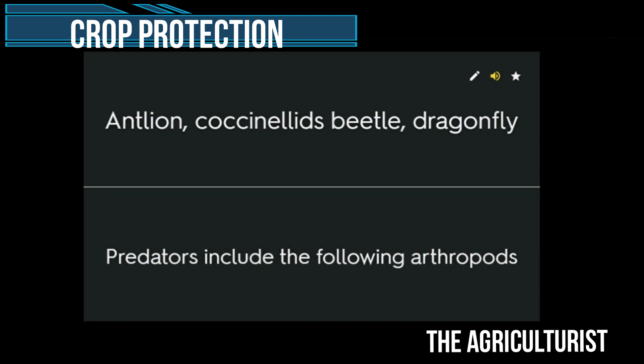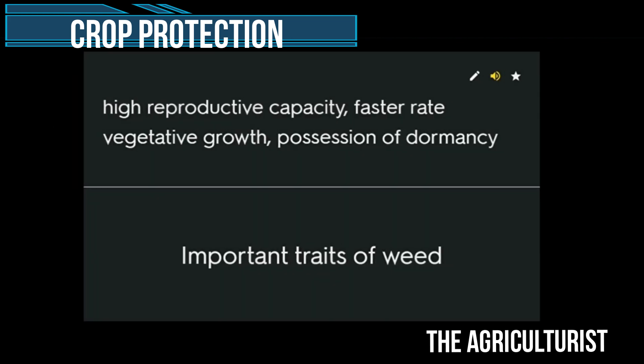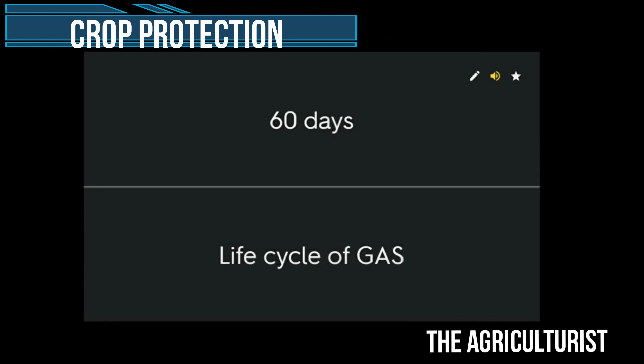Antlion, coccinellids, beetle, dragonfly — predators that include the following arthropods. High reproductive capacity, faster rate of vegetative growth, possession of dormancy — important traits of weeds. 60 days: life cycle of GAS.